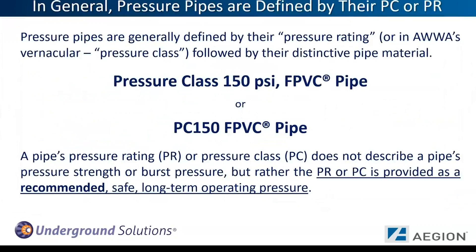Pressure pipes are generally defined first by their pressure rating, or in AWWA's terminology, pressure class, followed by their distinctive pipe material. For fusible PVC pipe, you might expect to see pressure class 150 TSI fusible PVC pipe, or more simply just PC150 FPVC pipe.